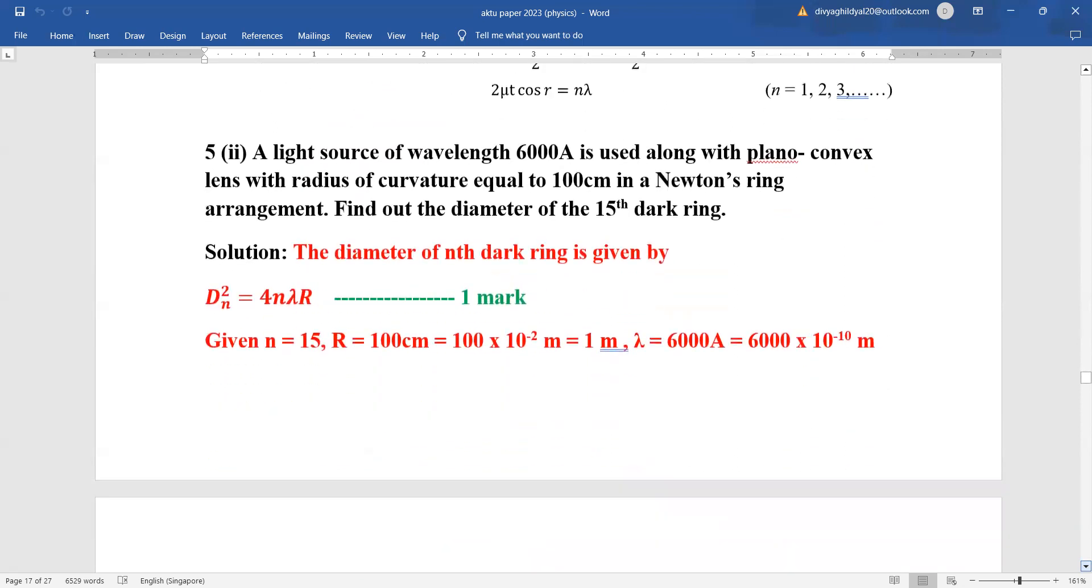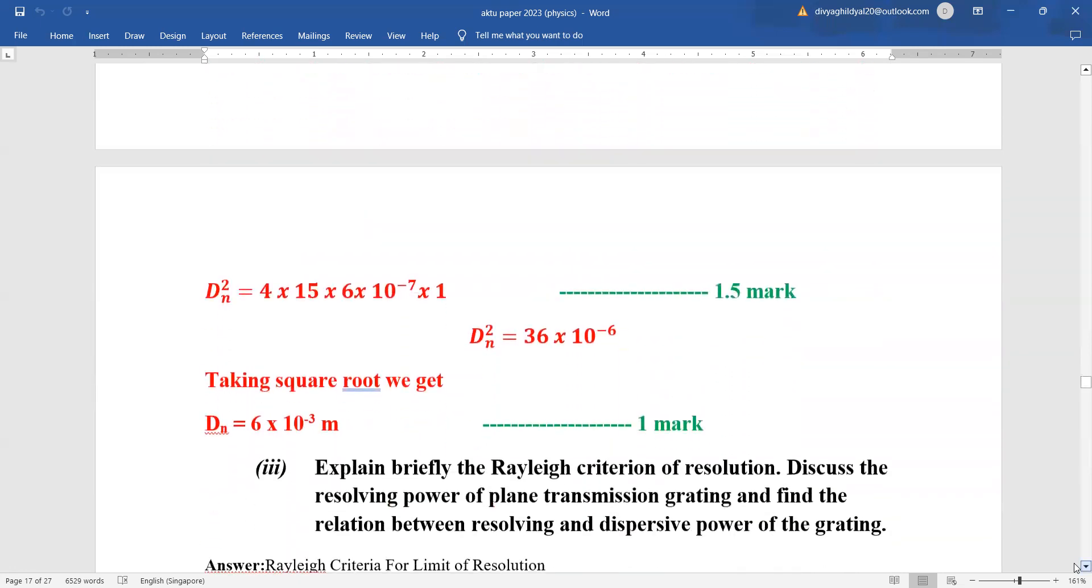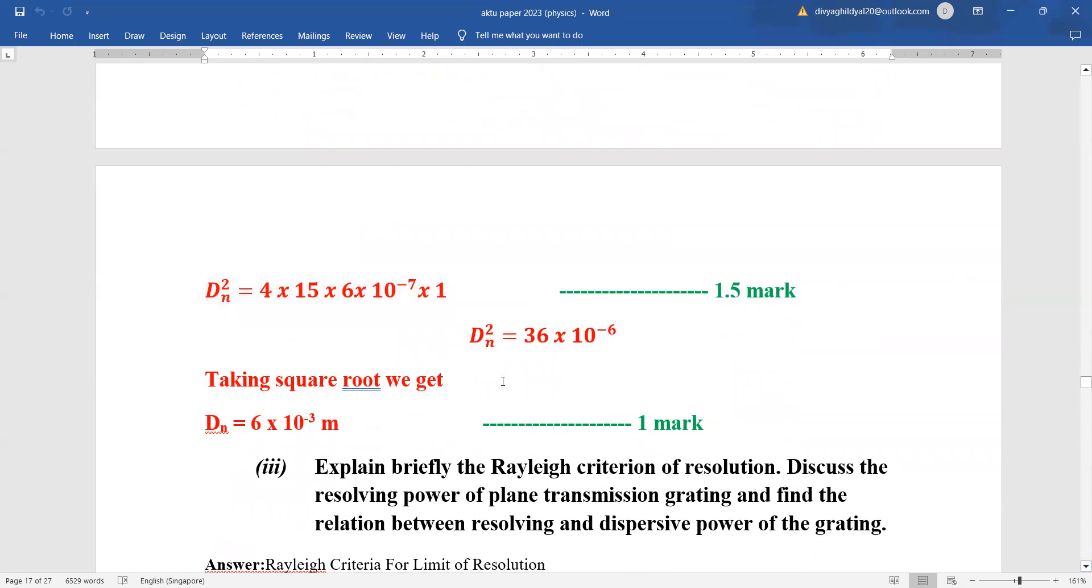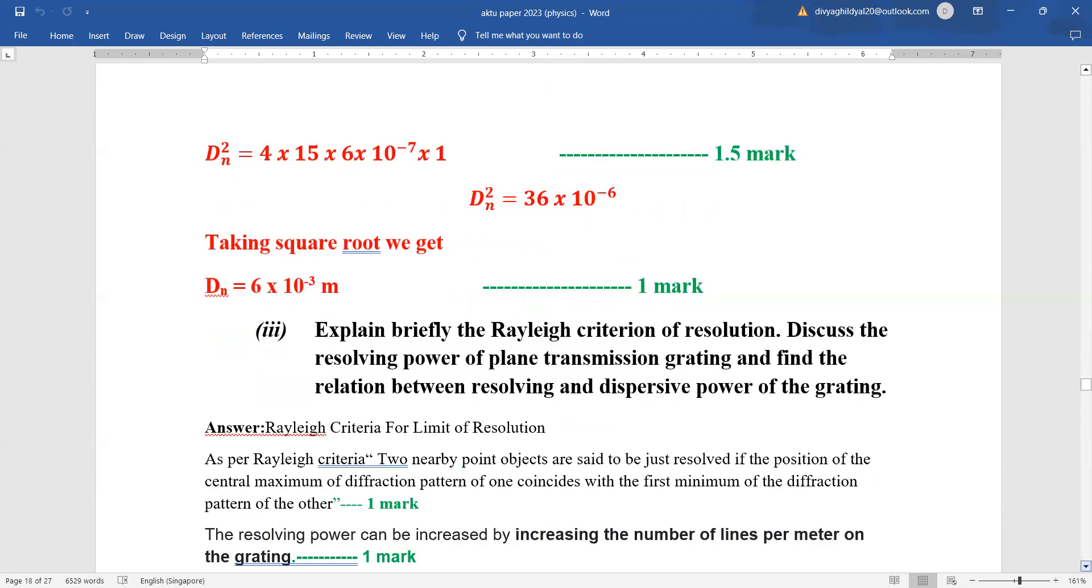Numerical: the diameter of nth dark ring is given by d n square equals 4 n lambda r. Here they have given n 15th dark ring, r 100 centimeter. You can change it into meter or keep the whole expression in centimeter. That is not a problem. Lambda they have given 6000 angstrom. One angstrom is 10 to the power of minus 10 meter. The whole has been changed into meter. Putting the values here in d n then taking square root we get diameter of the 15th dark ring as 6 into 10 to the power of minus 3 meter.